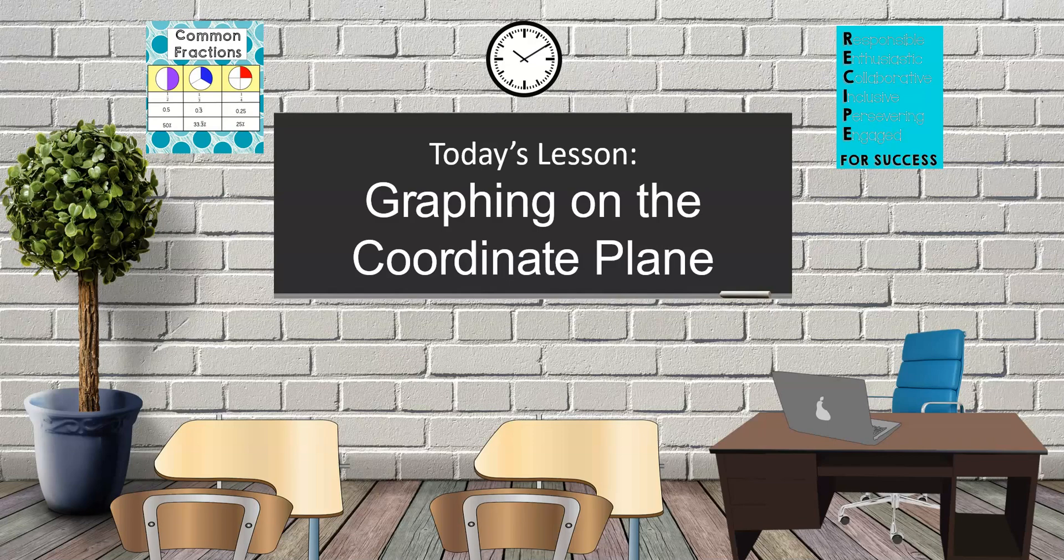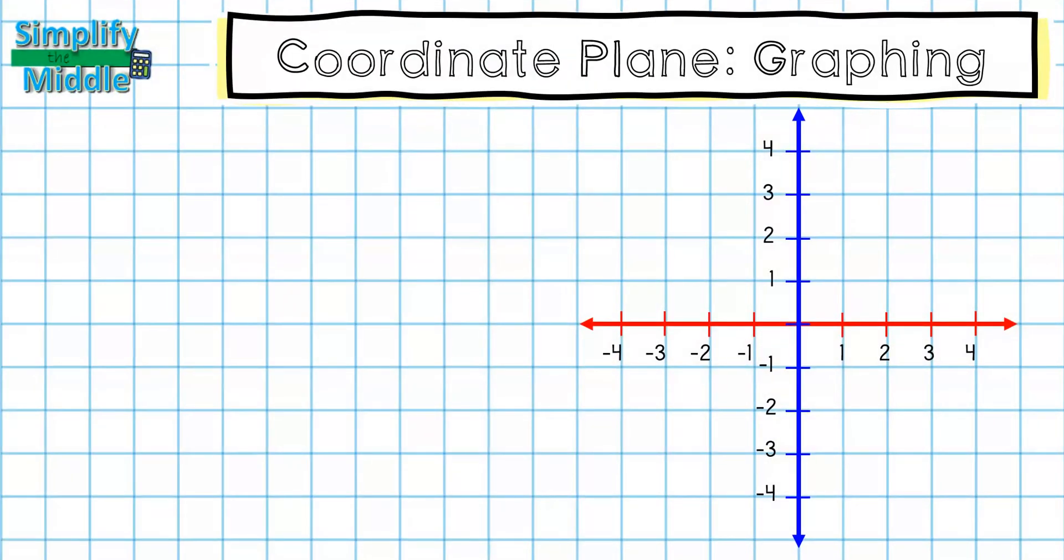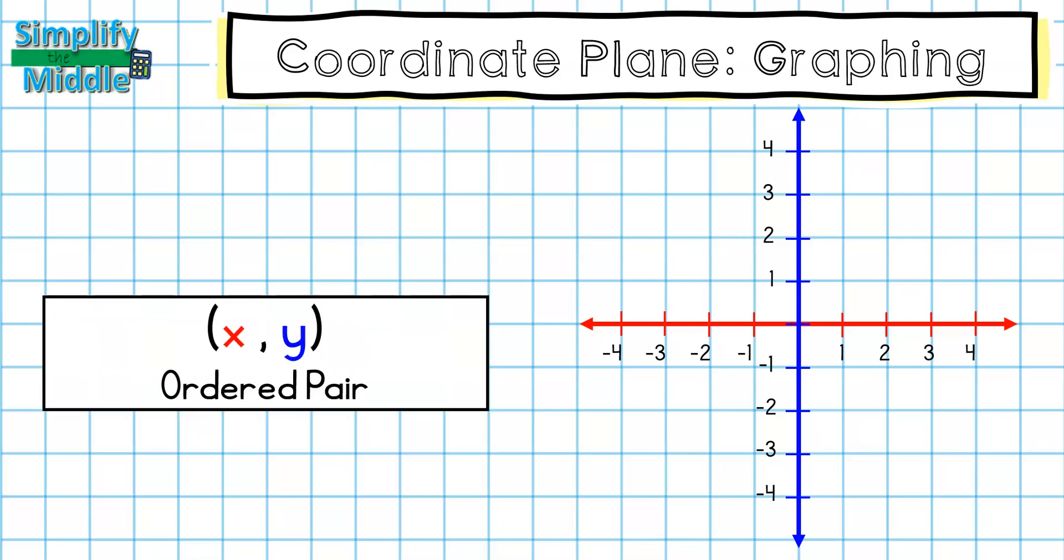Hi and welcome to today's lesson graphing on the coordinate plane. Last lesson we identified parts of the coordinate plane, the axes, the origin, and the quadrants. We also talked about something called an ordered pair. Today we're going to use an ordered pair to graph points.